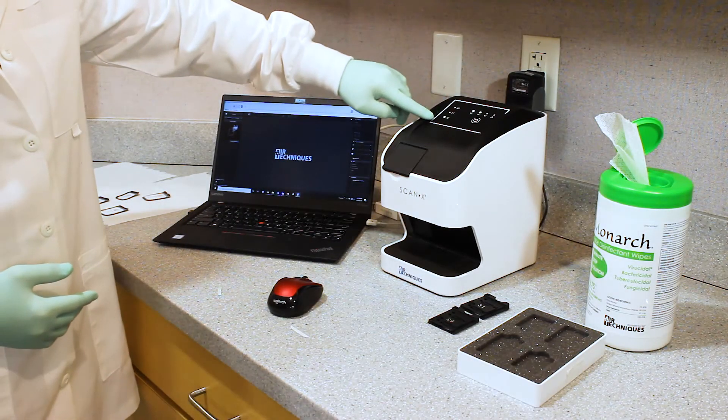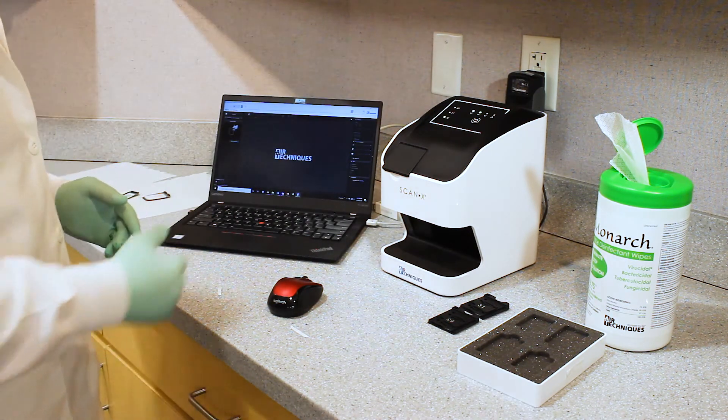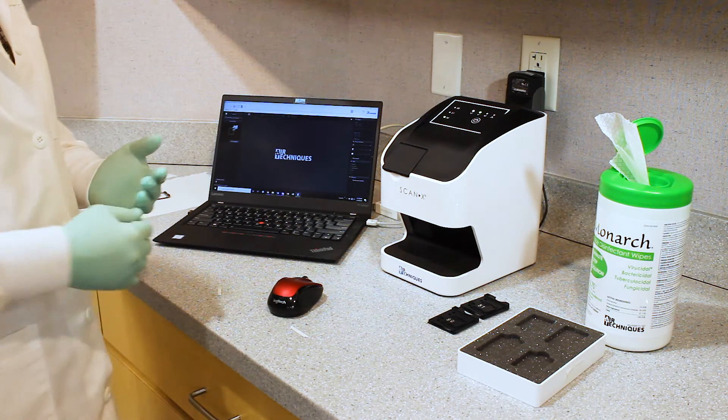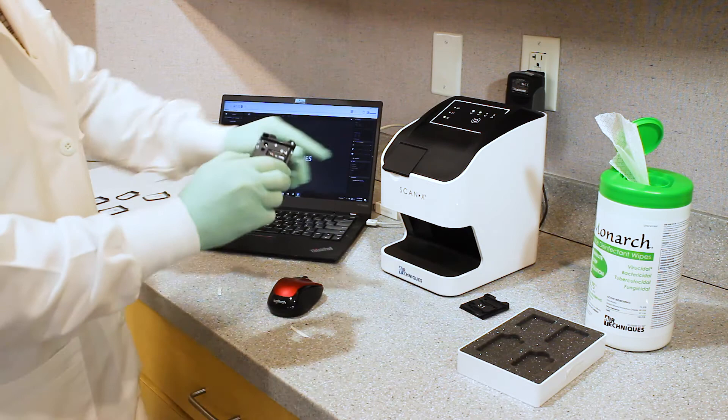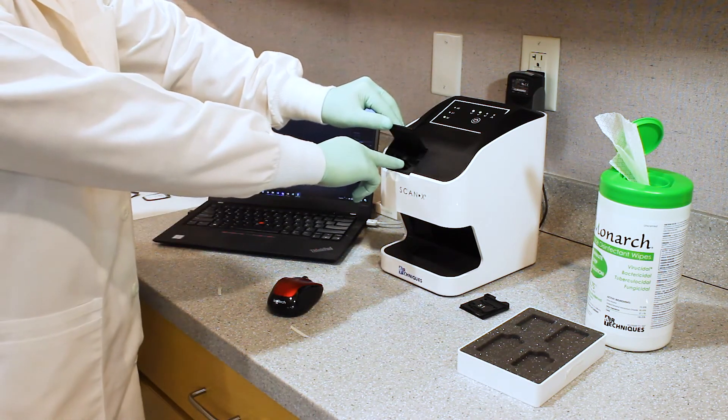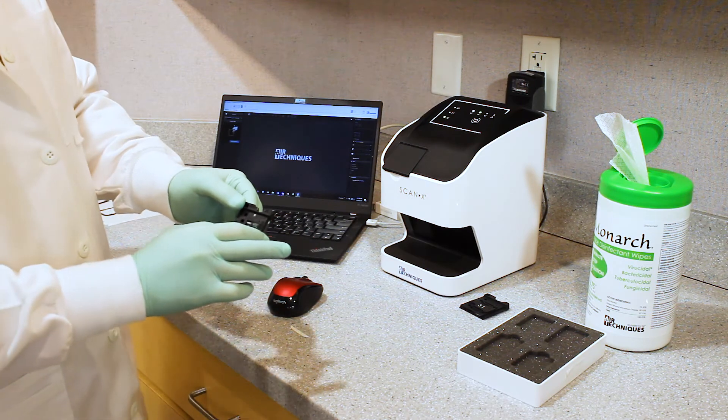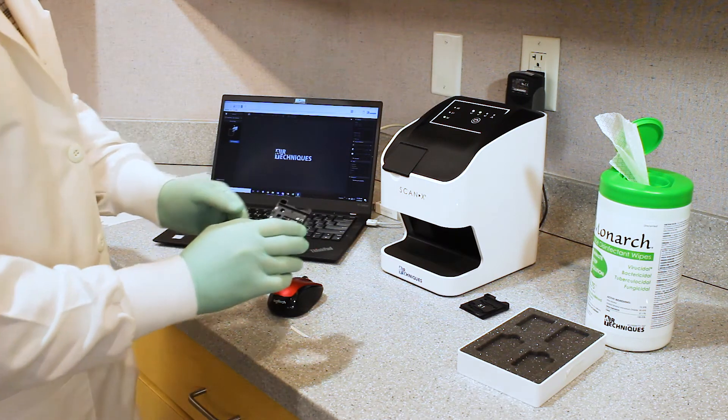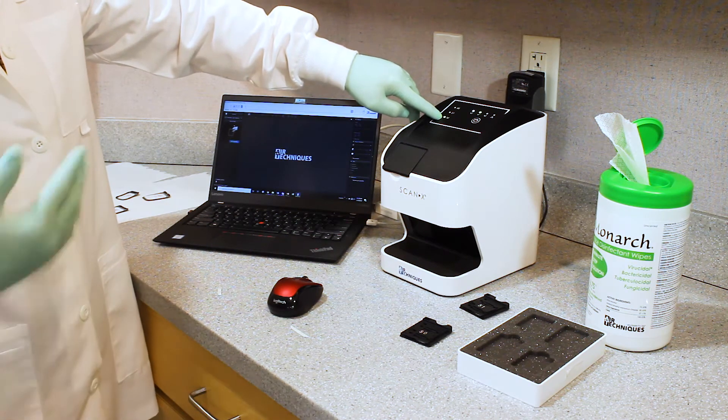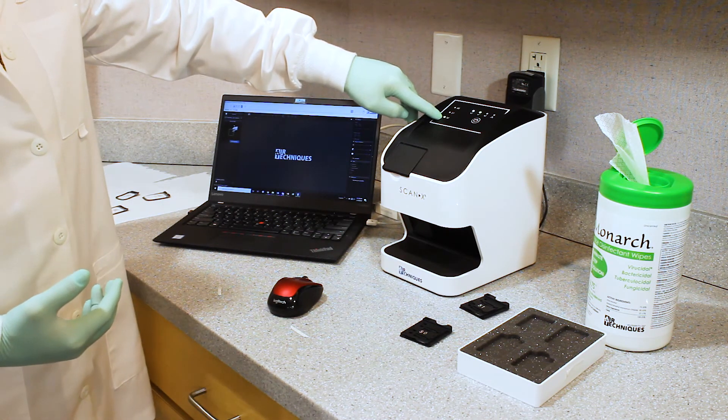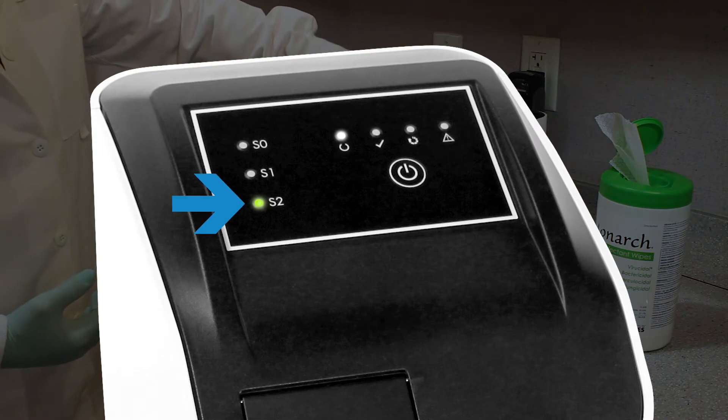Now, what you're seeing over here are which cartridges happen to be in the ScanX. So because this machine can do size zero, size one, and size two, they have specific cartridges that would be inserted into the machine itself, depending on what plate we are scanning at the time. So right now, the size number two is inserted into the ScanX, and that's the first plate that we're going to scan into the machine. So that's why that is illuminated with S2.